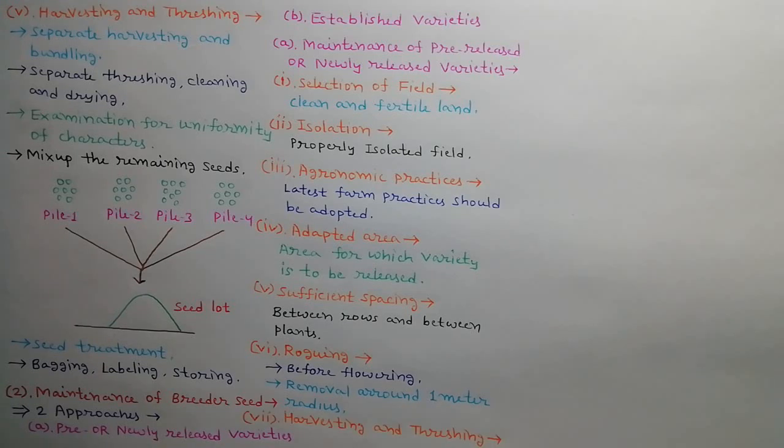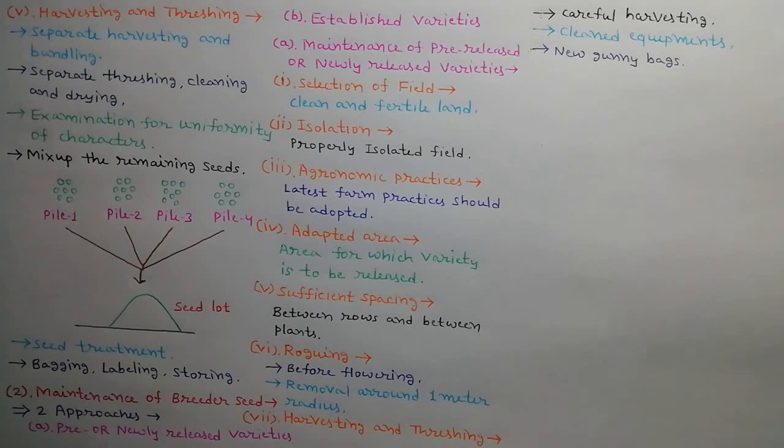The seventh step is harvesting and threshing. Breeder seed must be harvested carefully. Equipments used for harvesting, threshing and cleaning must be cleaned properly to avoid physical mixing. Seeds must be stored in new gunny bags.